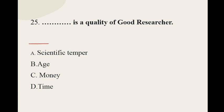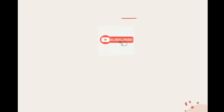Question number twenty-five: Dash is a quality of a good researcher — the options are: scientific temper, age, money, time. The correct option for question number twenty-five is scientific temper. I hope you guys have liked this video. If you really liked my videos, don't forget to subscribe the channel and press the bell icon so that you can get this kind of videos in days to come.